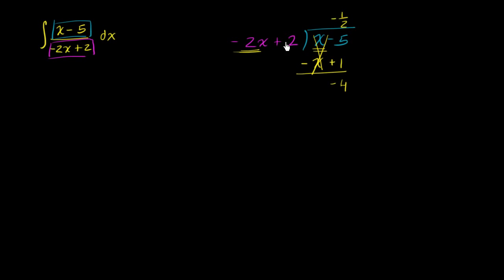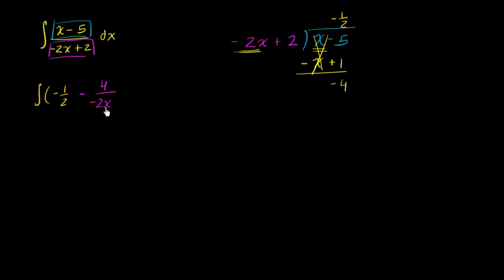So you could say negative two x plus two goes into x minus five negative one half times, with negative four left over. So we can rewrite our original integral as negative one half minus four over negative two x plus two, dx.